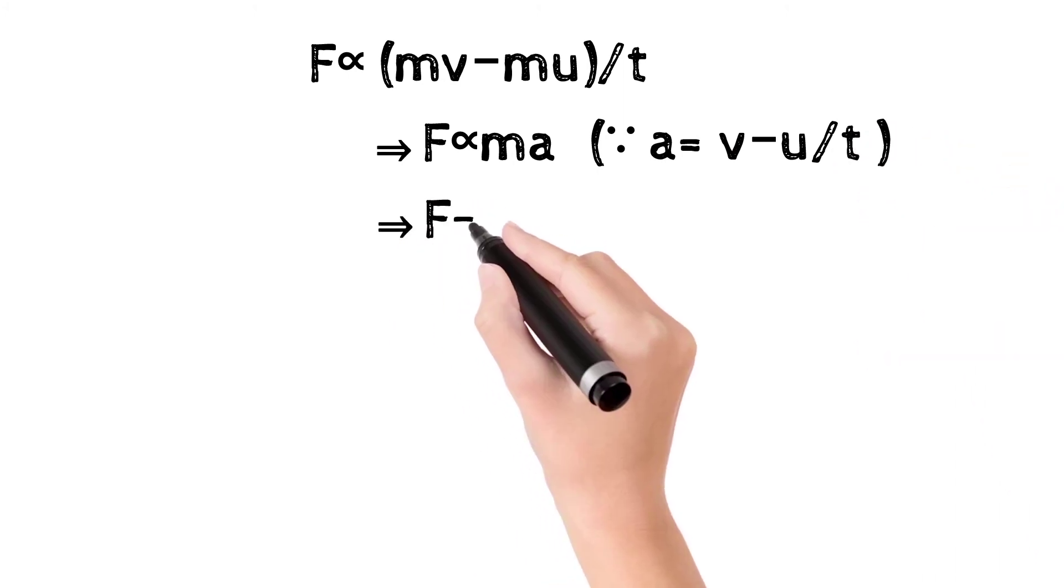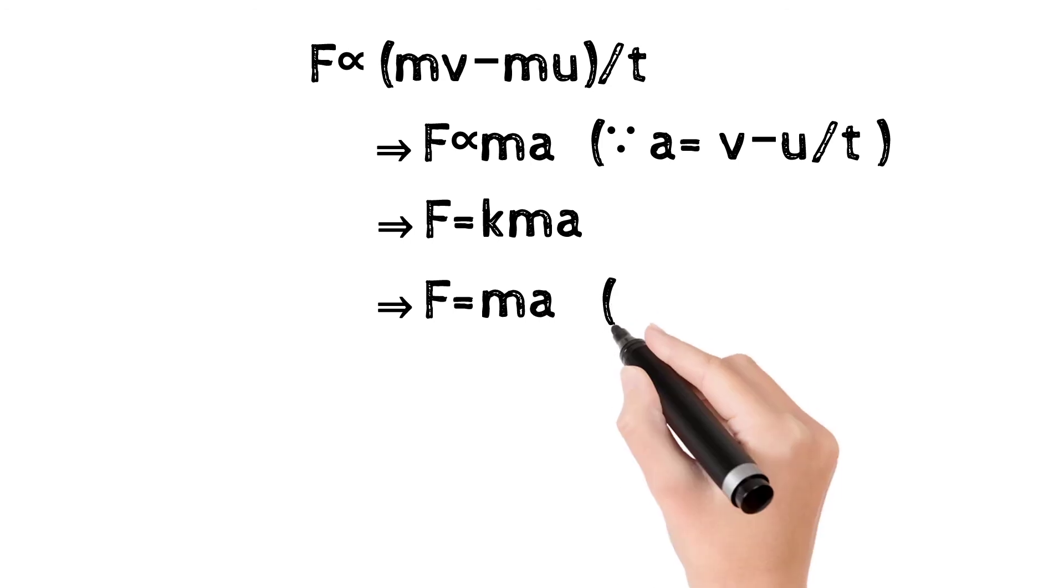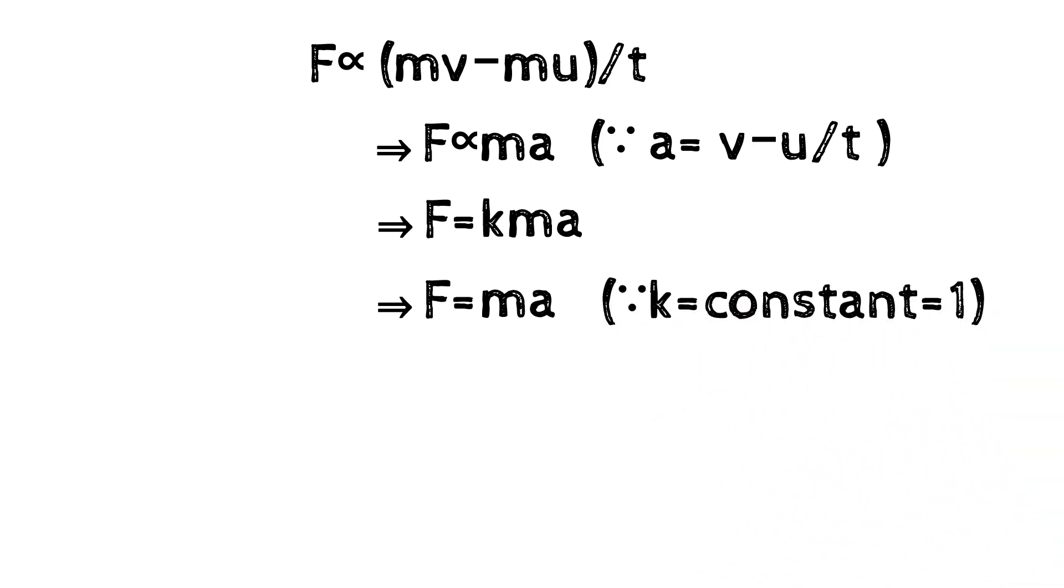When we remove the proportional sign, a constant term is added. So F equals kma, and if the constant k equals 1, then F equals ma.